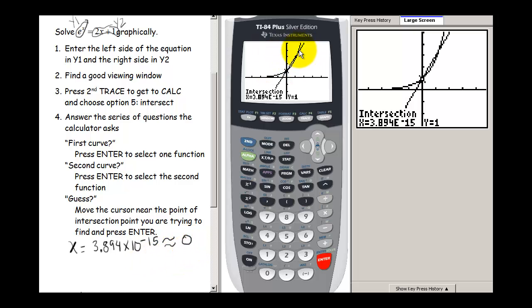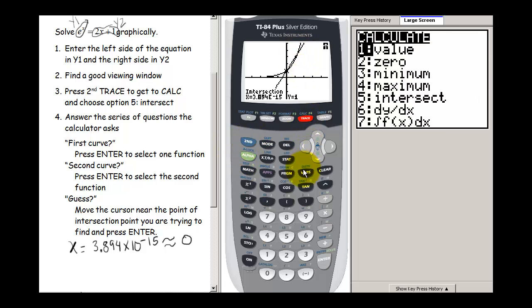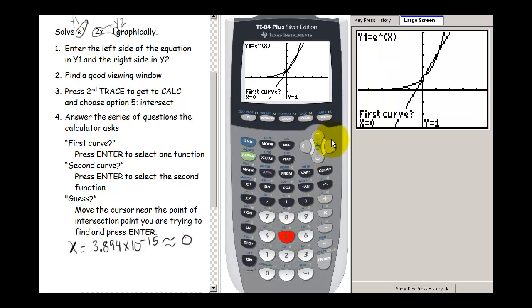To find this second point of intersection, we're going to need to go through this process again. So we're going to go second trace. We're going to choose intersection. And this time, I'm going to press enter, enter. And when it asks me for a guess, I'm going to move that spider over near this second point of intersection. If I don't move it, it's going to give me that first intersection point again. And then press enter again.